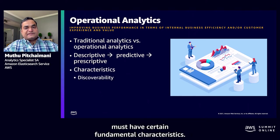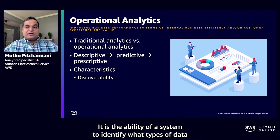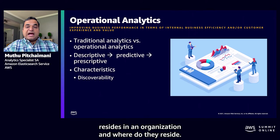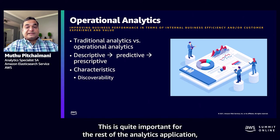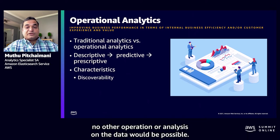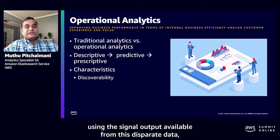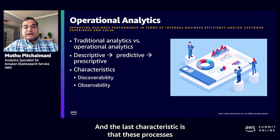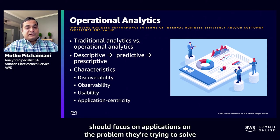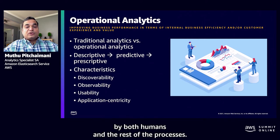Any operational analytics system must have certain fundamental characteristics. The first is discoverability — the ability of a system to identify what types of data reside in an organization and where they reside. This helps in providing consistent delivery and access to the data, and is critical because without it no other operation or analysis on the data would be possible. The next is observability — the ability to infer the internal state of the system using the signal output available from this disparate data. Finally, these processes should focus on applications and the problem they are trying to solve, in a way that is easily consumable by both humans and the rest of the processes.